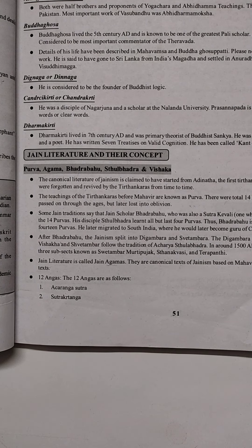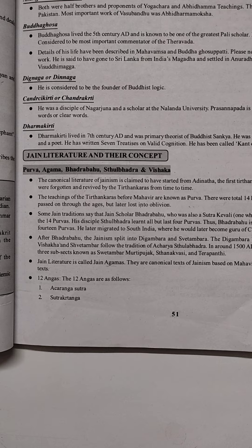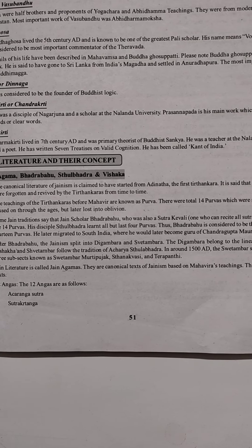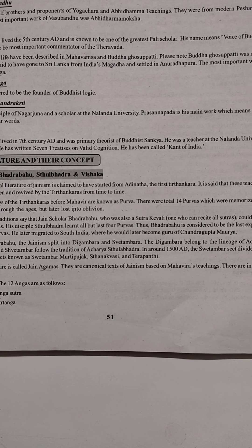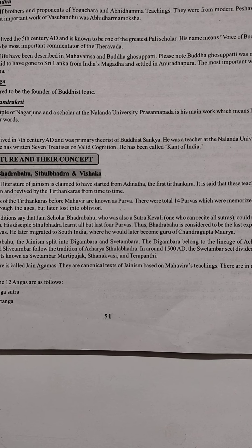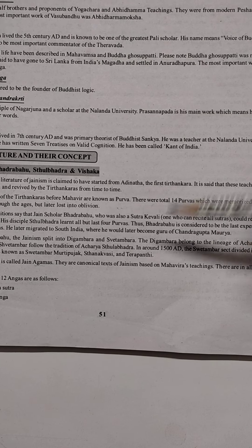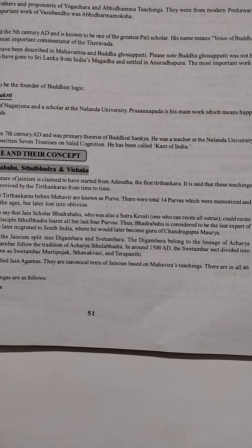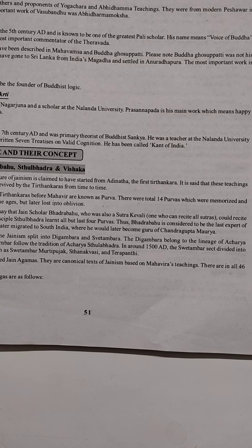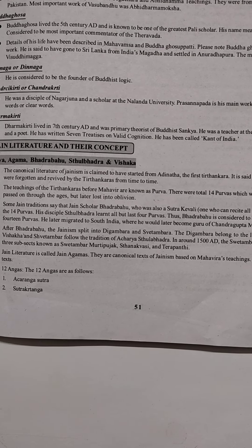The chronological literature of Jainism is claimed to have started from Adinath, the first Tirthankar. It is said that these were forgotten and revived by the Tirthankars from time to time. The teachings of the Tirthankars before Mahavira are known as Purv. There were a total of 14 Purvs, which were memorized and passed down through the ages but were later lost into oblivion.